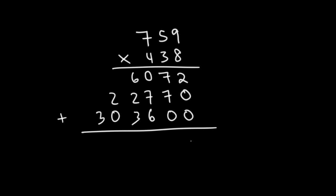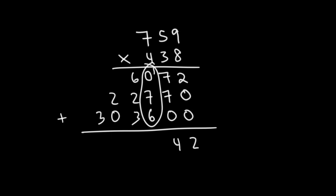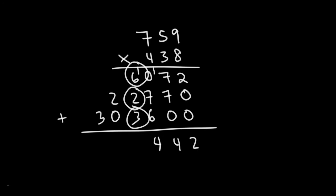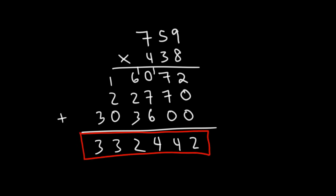And now we can add. So we have 2. And then 7 plus 7 is 14. We need to write the 4 and carry the 1. And then we have 1 plus 7 plus 6. 1 plus 7 is 8, 8 plus 6 is 14. So let's write 4 and carry over the 1. Then we have 1 plus 6 which is 7, 7 plus 3 is 10, 10 plus 2 is 12. And then 2 plus 1 is 3, and then we can write the other 3. So the final answer is 332,442. Now you know how to multiply two numbers using long multiplication.